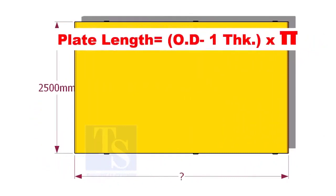To calculate the length, subtract 1 thickness of the pipe from the OD and multiply with the value of pi.